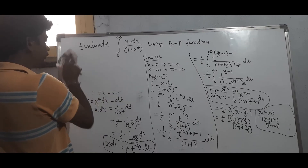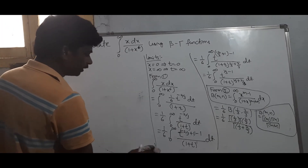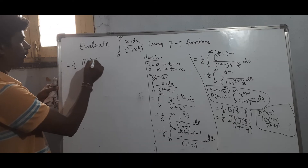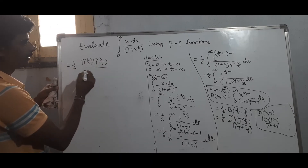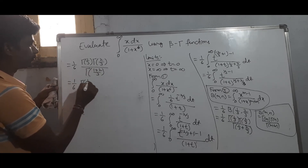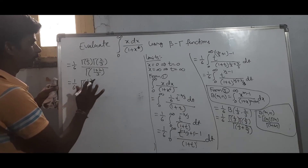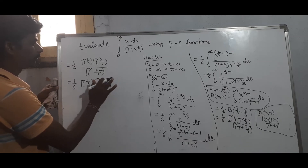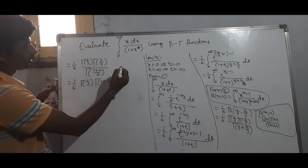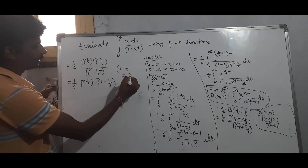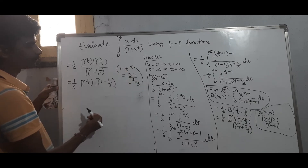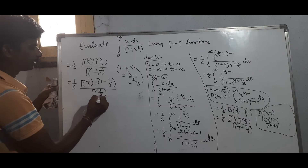Using the formula for beta in terms of gamma functions, this equals (1/6) times gamma(1/3) times gamma(2/3) divided by gamma(1/3 plus 2/3), which is gamma(1). Now, 1 minus 1/3 equals 2/3, so we can write gamma(1 minus 1/3) in place of gamma(2/3).